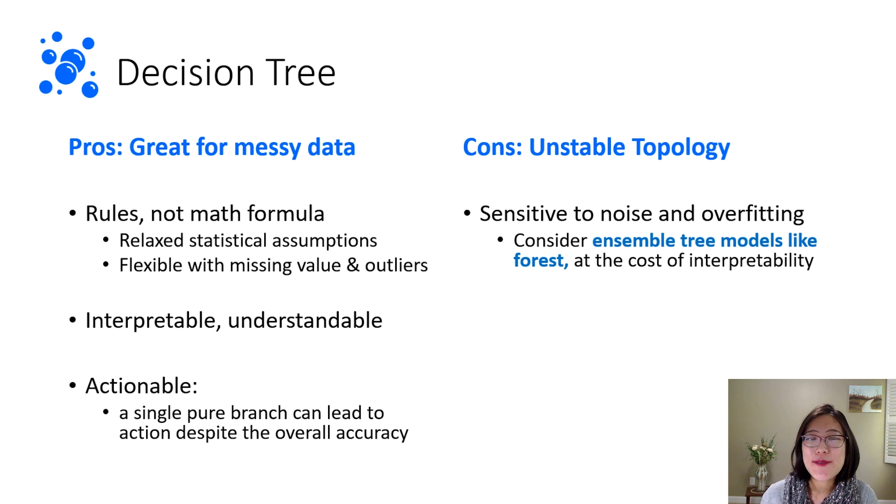Decision tree is also super interpretable. You can show it to other people without data science background and they can still understand what you're saying. It's also super actionable. Sometimes your data is really messy and you don't achieve an overall high accuracy, but in decision tree, let's say you're trying to capture potential customers. You can find this one branch that captured 20% of all potential customers, and all the data in this branch, 90% of them are potential customers. So even though the overall tree is not super accurate, you can just write an SQL to use this one pure branch. So it's very actionable.